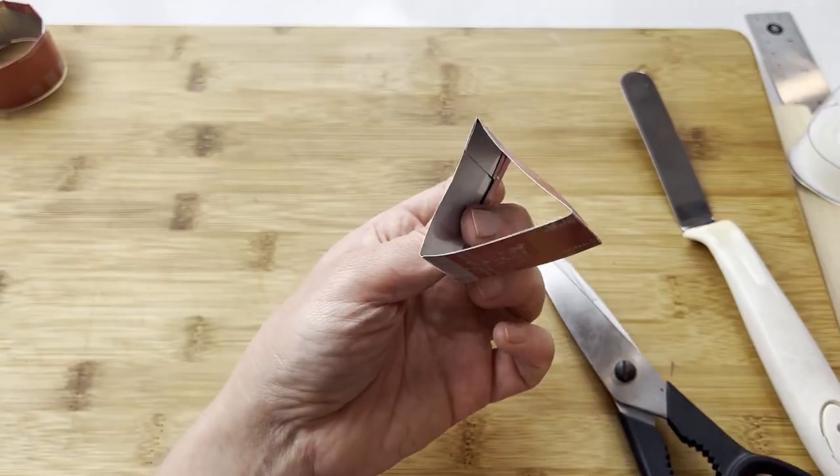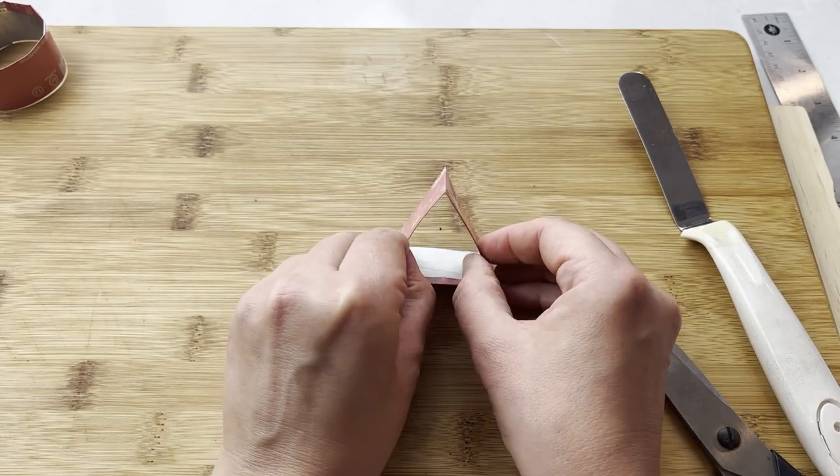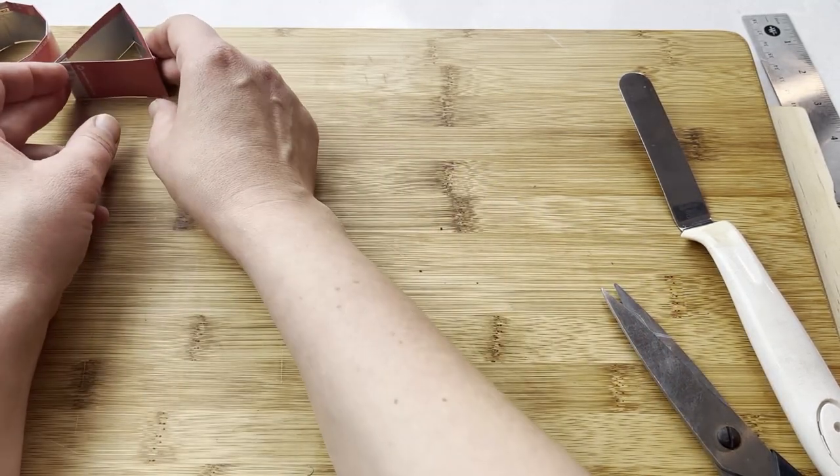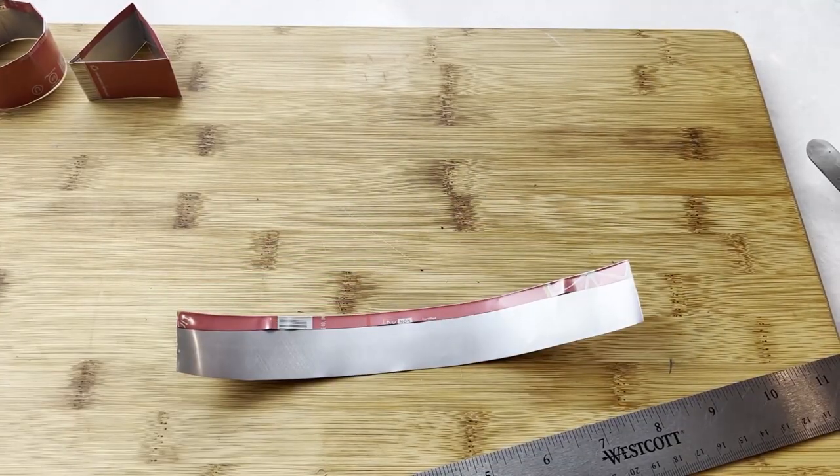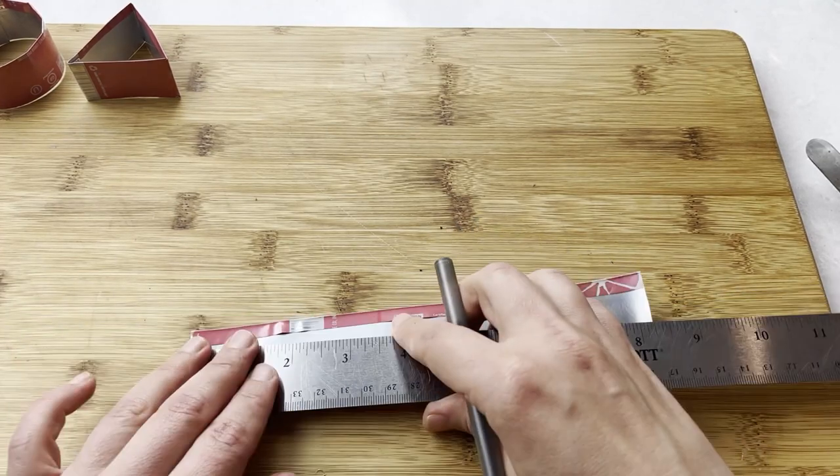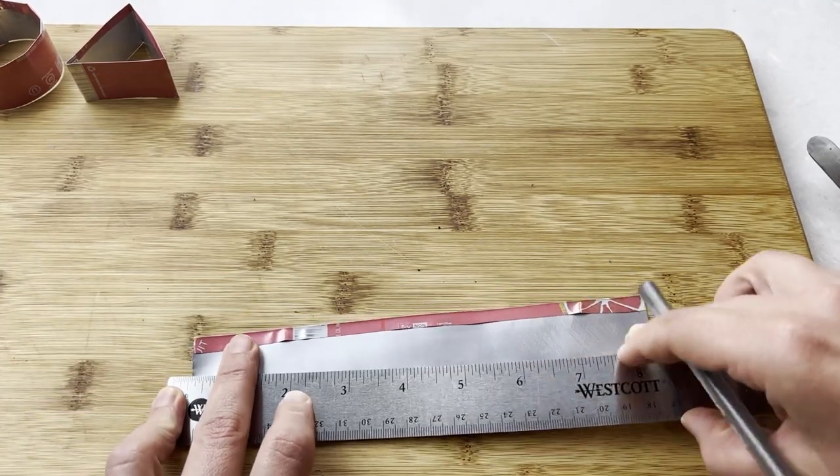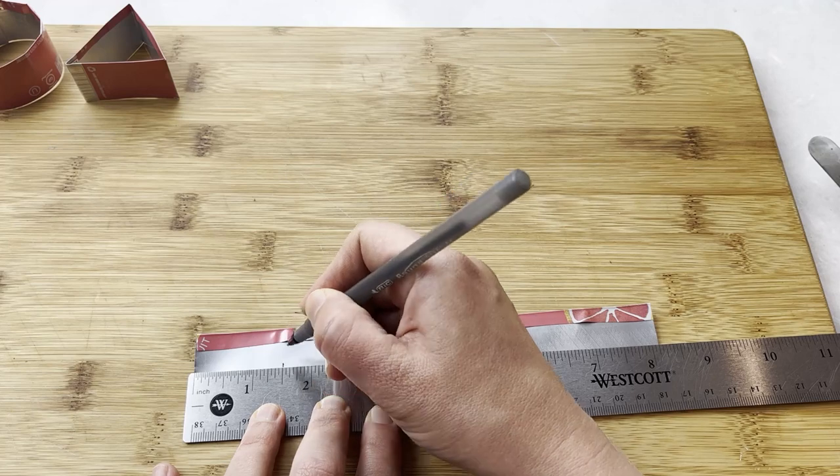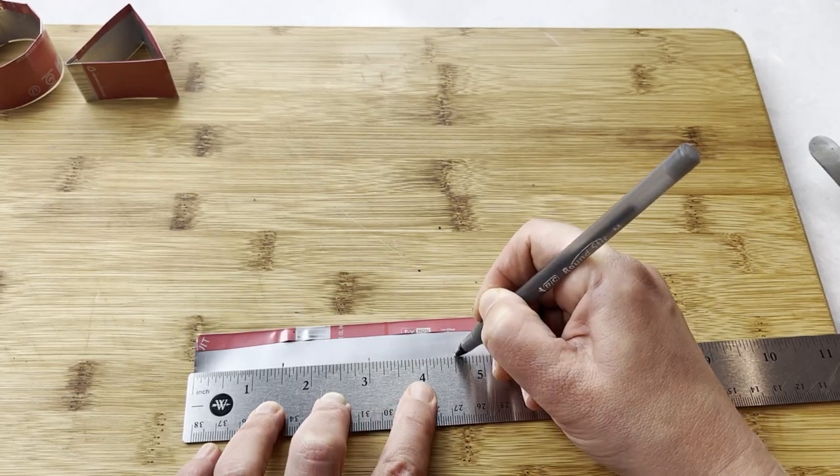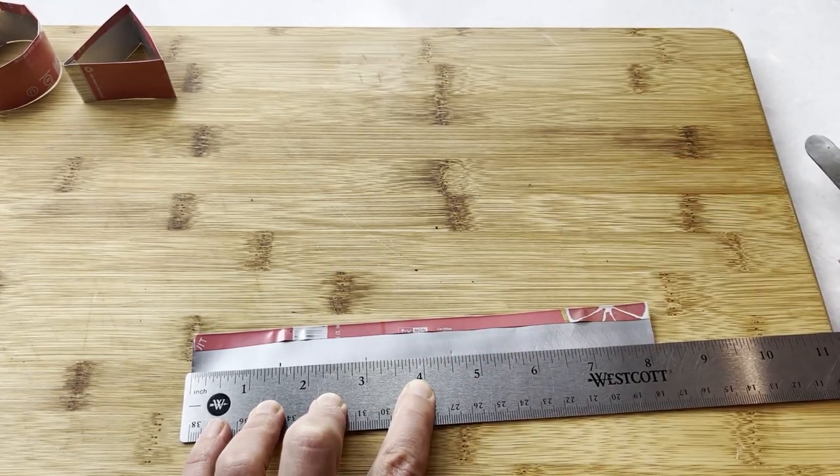The triangle is done, so let's start working on our square. The good news about the square is the same steps as a triangle, just with slightly different measurements, and of course, additional side. The measurements for each side are going to be one and a half inches, or 3.75 centimeters. To make things easier, if you're working in centimeters, just make it four.